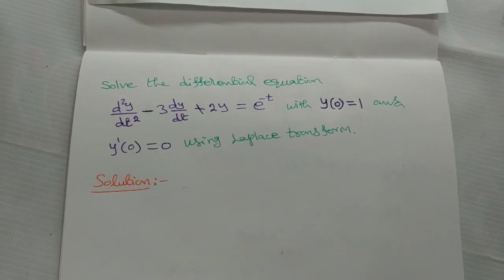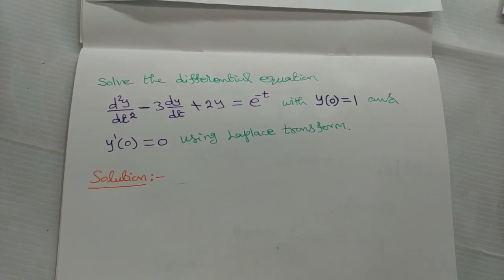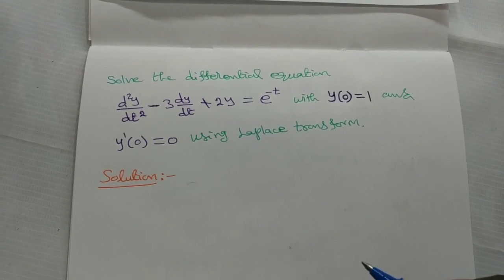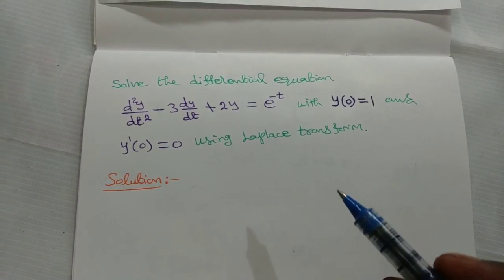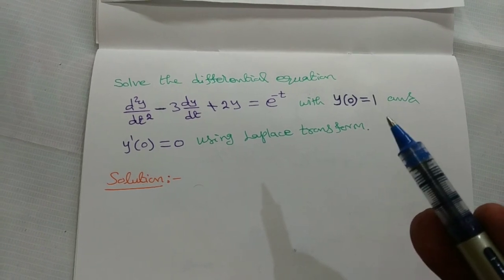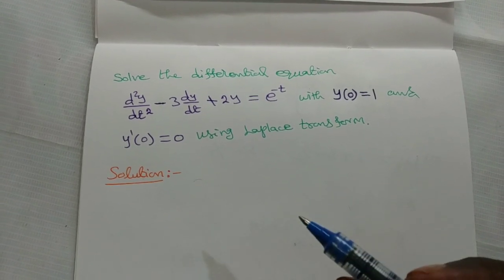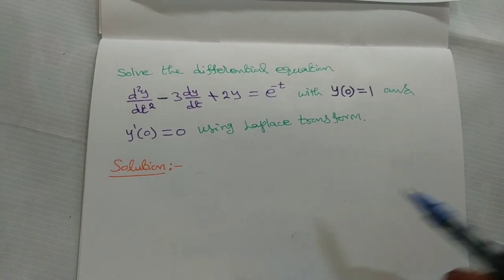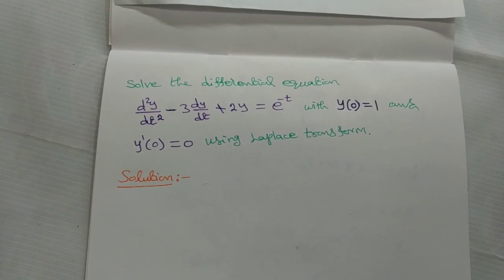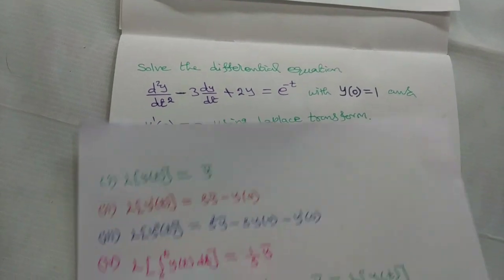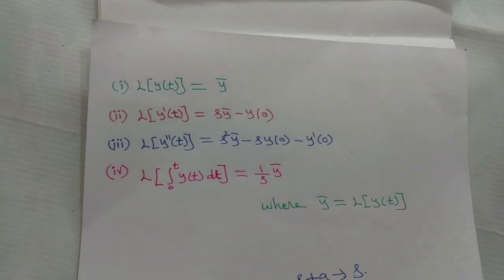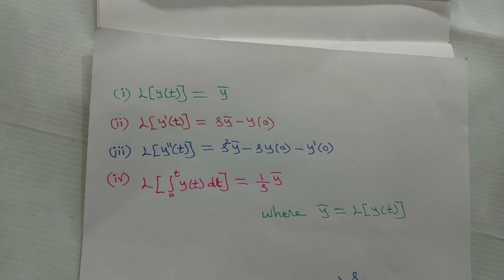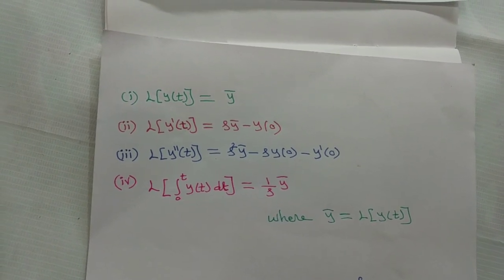Solve the differential equation d²y/dt² minus 3 dy/dt plus 2y equals e power minus t, with y(0) equal to 1 and y'(0) equal to 0, using the Laplace transform method. To solve this differential equation we need these formulas, and by using them we can solve the differential equation by the Laplace transform method.